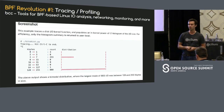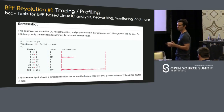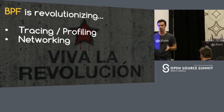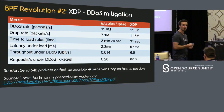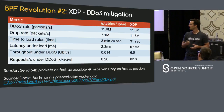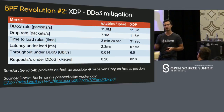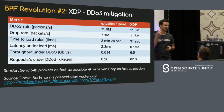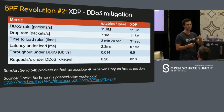But tracing and profiling is not the only field that BPF is revolutionizing. Another one is networking — that's the one we focus on most. Some of you may have seen Daniel Borkman's presentation yesterday. He talked about BPF in general and XDP, Express Data Path. XDP is a framework which allows us to run BPF programs at the network driver level of Linux, very close to the actual hardware, the NIC.